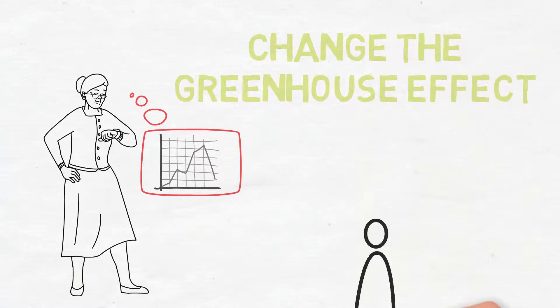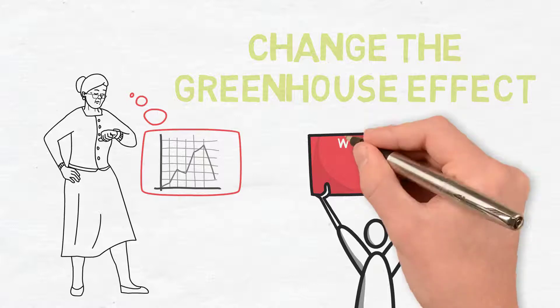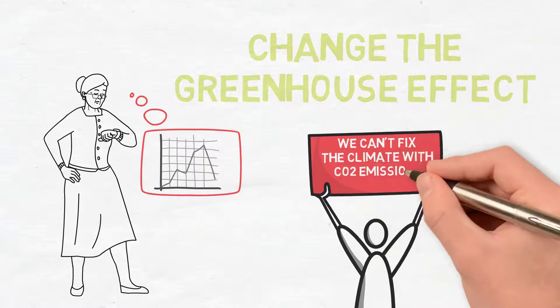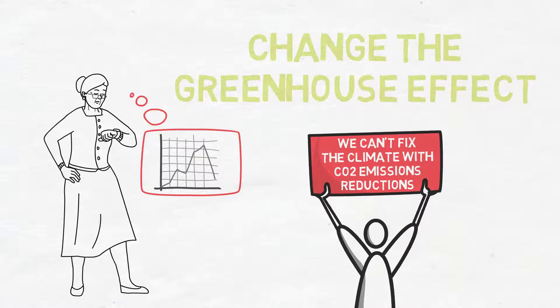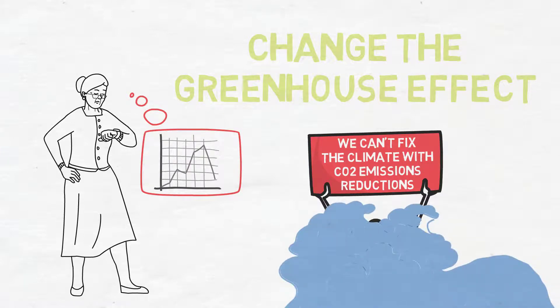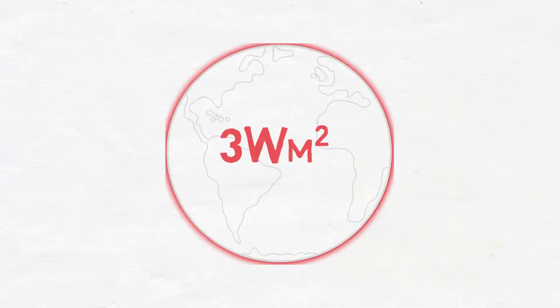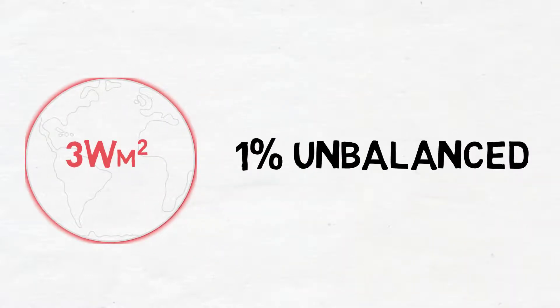So it's actually the evidence that we can't fix the climate anymore with CO2 emissions reductions because the ocean is such an enormous sink and we've heated the planet artificially about 3 watts per square metre, which is about 1% unbalanced.